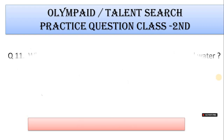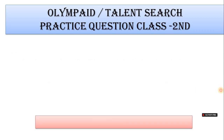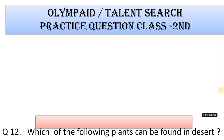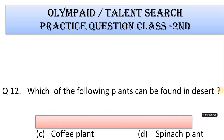Number 11: Which of the following will survive without food and water? A. Dog, B. Girl, C. Pin, D. Bird. Correct answer is Option C. Pin.